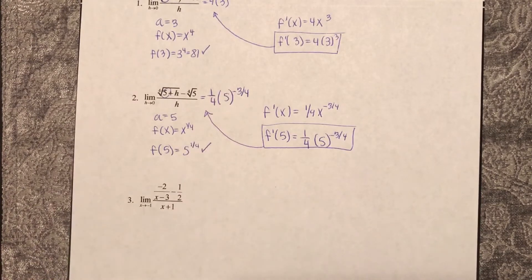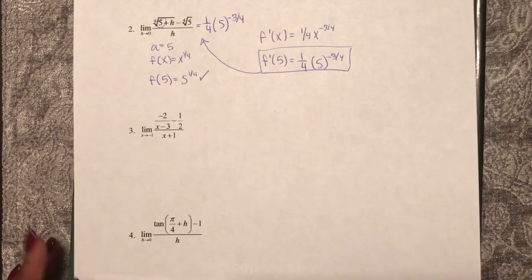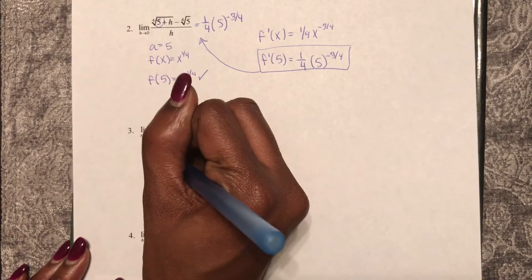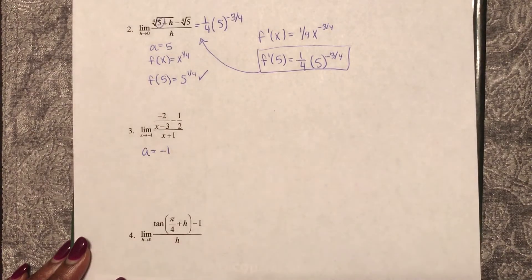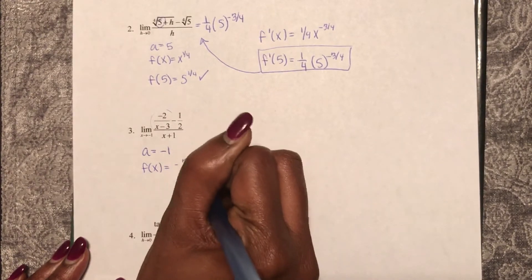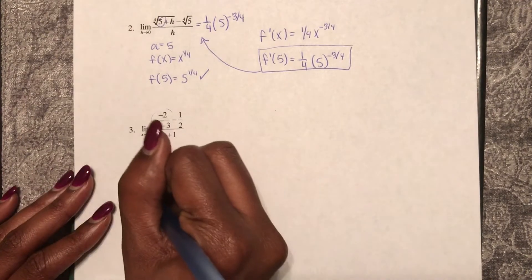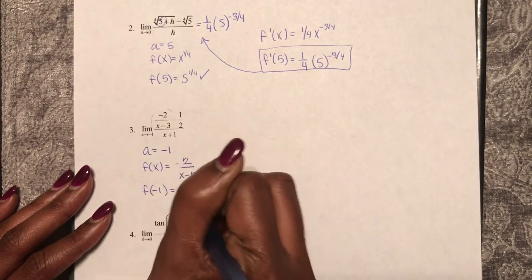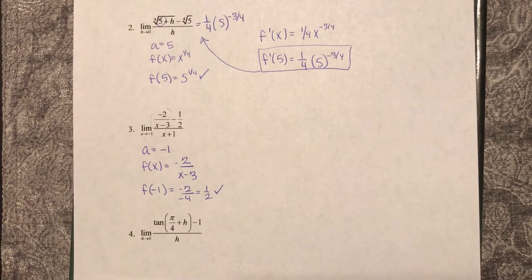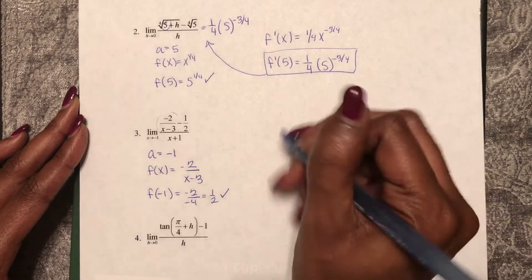So once again, this is unsimplified, acceptable for the AP. Moving on to number 3, here I can see that a to me should be negative 1. And if I'm checking here, f of x equals negative 2 over x minus 3. So now I will check to make sure that when I plug in negative 1, I get my f of a value. So now this is telling me to find the derivative of this function at negative 1.